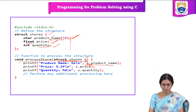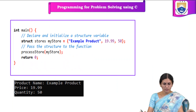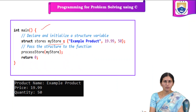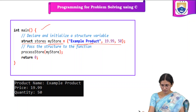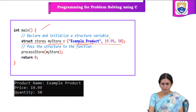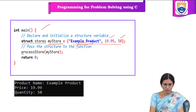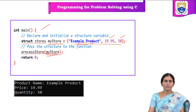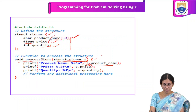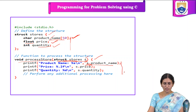We are printing the information for each particular member of the structure. Inside the main function, we are declaring a variable my_store of type struct stores, and in this same line, we are initializing the different members: example product is assigned to product name, 19.99 is assigned to price, and 50 is assigned to quantity. When we call this function and pass the my_store variable, the compiler goes to this function and executes it, displaying: s dot product name.